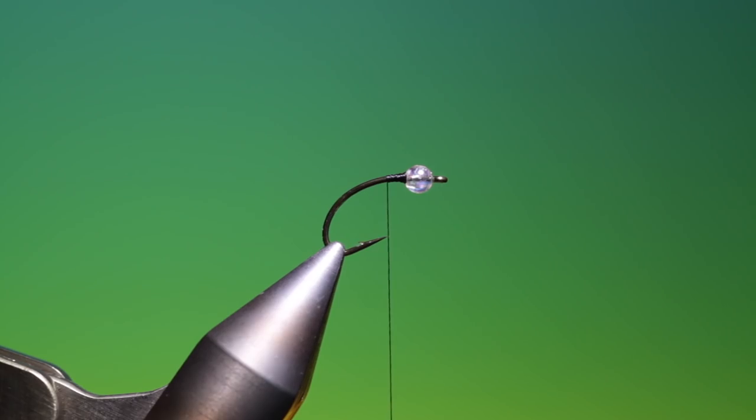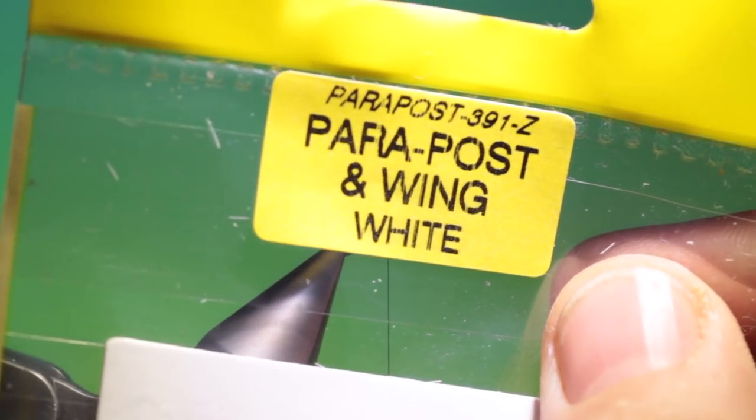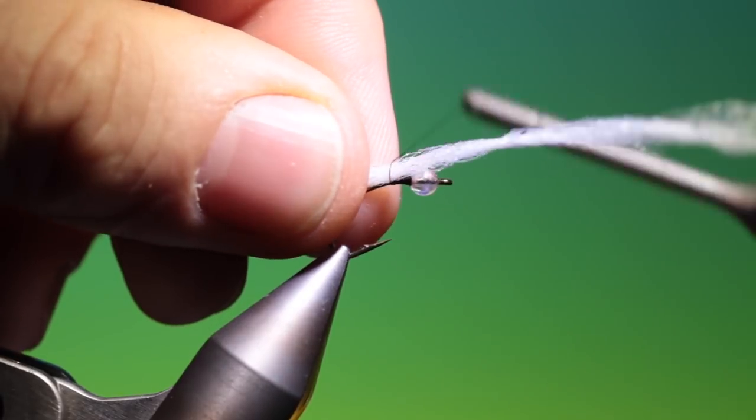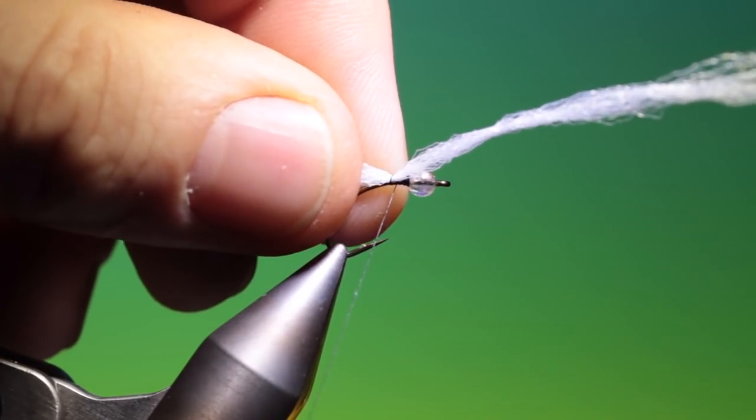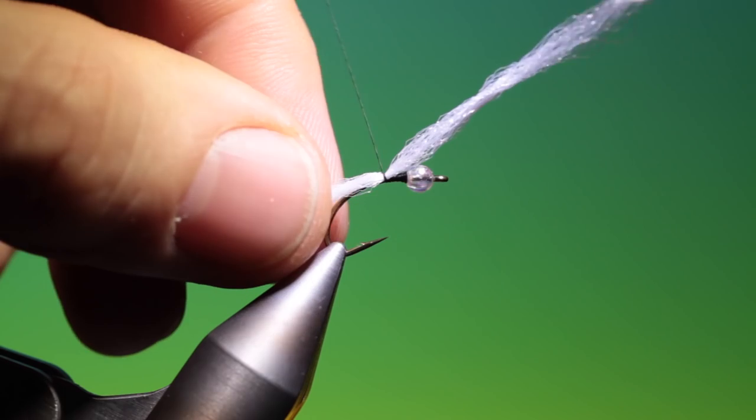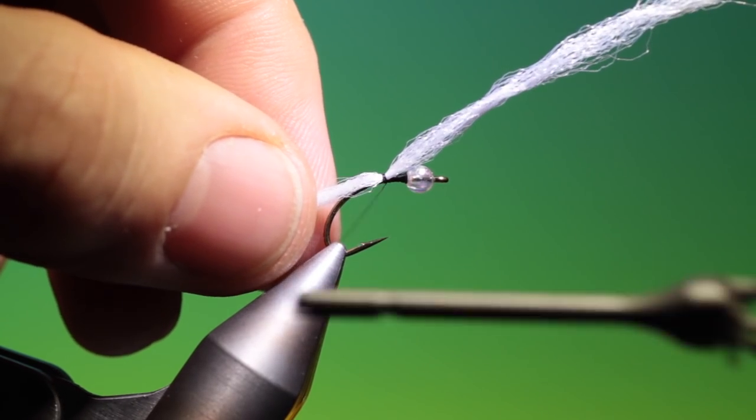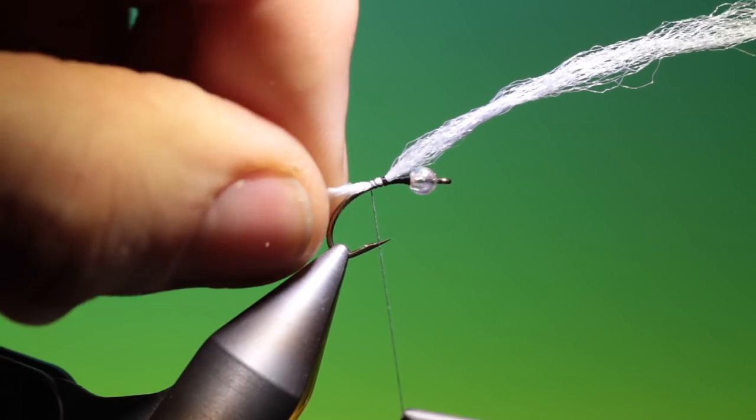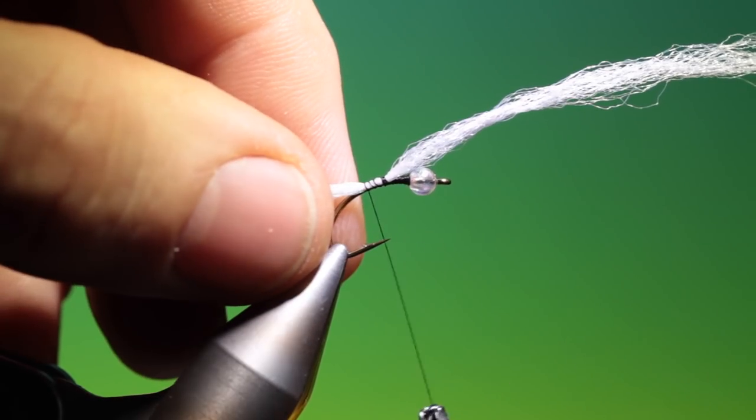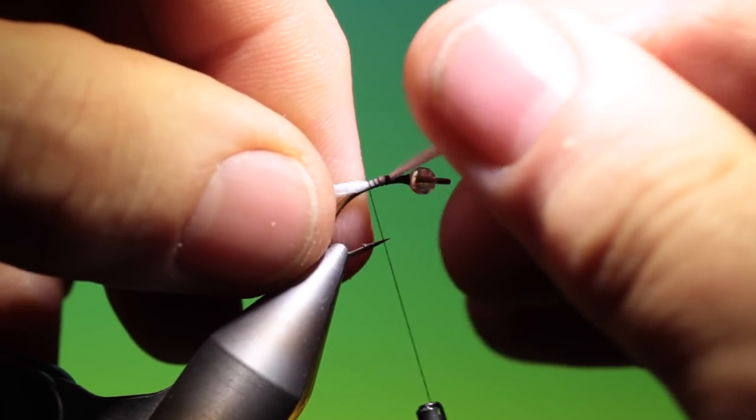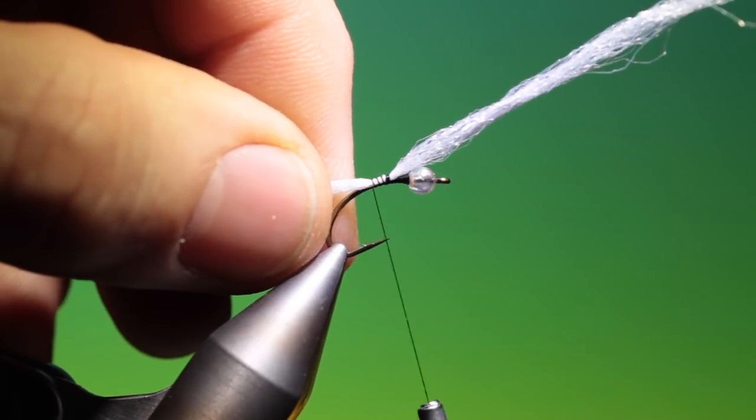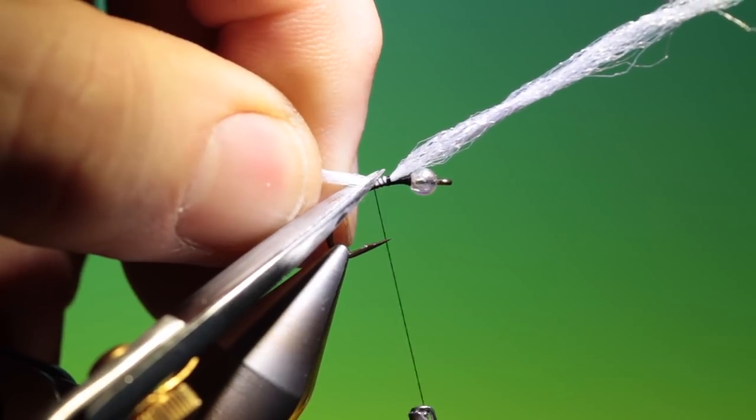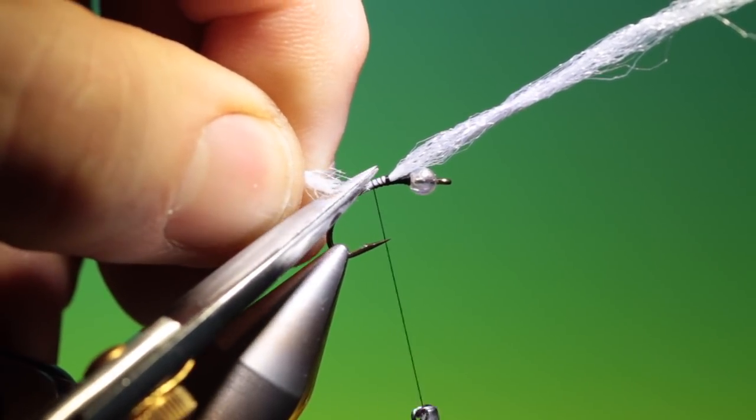Then what we need is some para-post winging material. That's how I tie this in. This will be for the post. Loose turns. There we go. And I'll just trim that off like so.